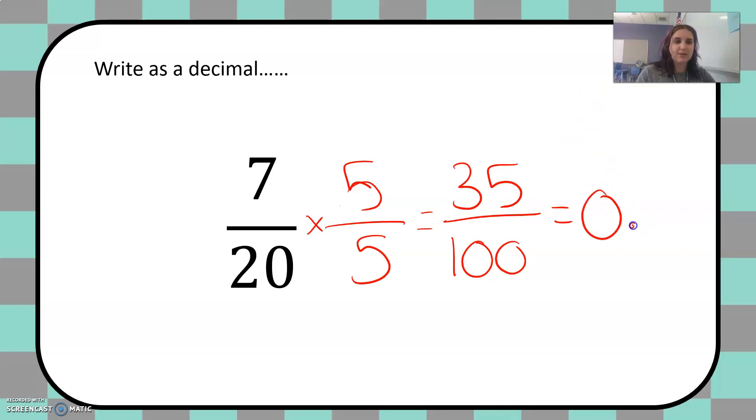I'll write a decimal in the hundredths place: 0.35, 35 hundredths. Great job.